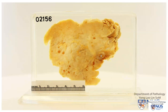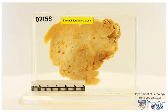The color has changed a little bit because of prolonged fixation in formalin. Now when we look at the cut surface there are some features to note. First of all, you can see this whitish appearance here — these are areas of sclerosed or fibrosed stroma. In between this we can see the fatty or adipose stroma, which is normal in the breast.